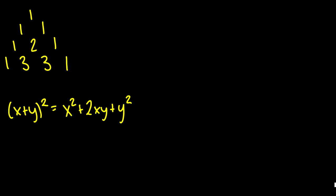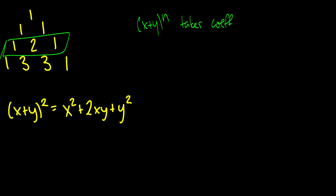As a quick example: (x + y)² = x² + 2xy + y², which is clearly the third row of the triangle. Formally, (x + y)^n takes coefficients from row n + 1 (so row 0 is the first row, row 1 is second, and so on). So (x + y)^2 takes row 3 of the triangle, which gives coefficients 1, 2, 1.